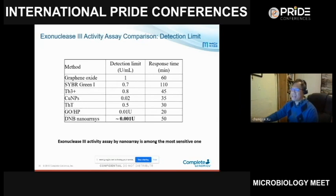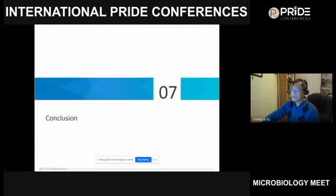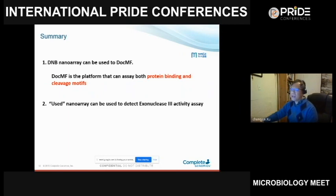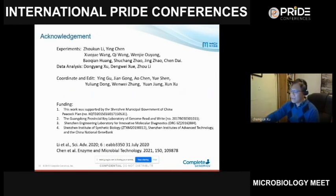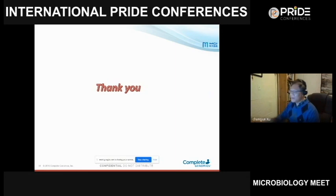Comparing this ExoIII activity assay to other available assays, our DNB array-based method is among the highest sensitivity available. In conclusion: the DNB array can be used for DocMF — a high-throughput platform to study protein-DNA interactions including both binding and cleavage — to find binding motifs or cleavage motifs within DNA. It can also be used to detect ExoIII activities. I thank my co-workers who did this work, and thank you for your attention.